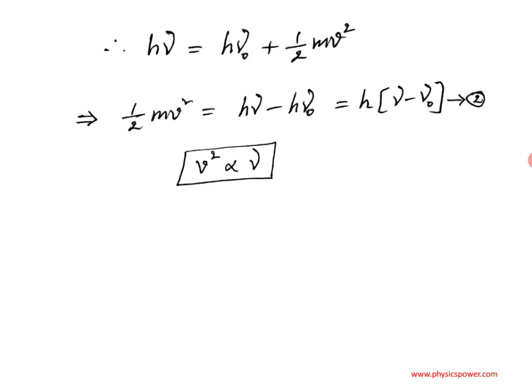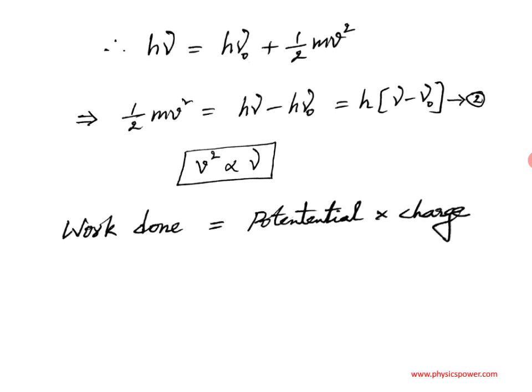Some work is done on the electron to stop it. According to the definition of potential, potential is work done per charge, so work done equals potential multiplied by charge. Applying the stopping potential V₀ on the electron to stop it means the total kinetic energy becomes zero. According to the work-energy theorem, we can write ½mv² = V₀e, where the total kinetic energy equals the work done.